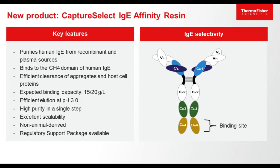Another product we recently launched targets IgEs. IgEs are an upcoming new monoclonal product because through their epsilon constant region — which differs from IgGs — they're supposed to provide better immune effector function and better tumor access. That prompted us to develop an IgE affinity resin for one single-step purification of IgEs from complex feedstocks. It binds to the CH4 domain of human IgEs, has excellent binding capacity, efficient elution at pH 3, and the same scalability and non-animal derivedness through our Saccharomyces cerevisiae production system.